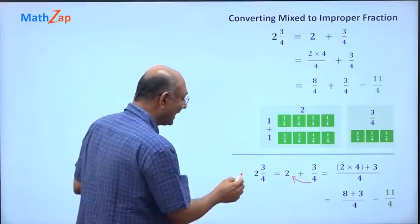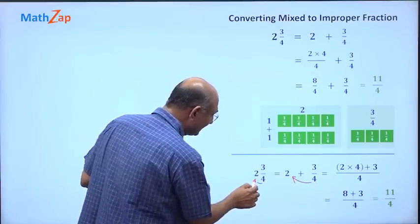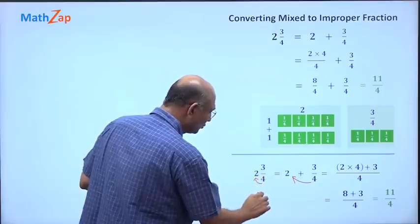Therefore, 8 plus 3, 11 by 4. I don't even need to do this far. I just simply say I will multiply these two, so 2 into 4 is 8 plus 3 by 4, so 11 by 4.